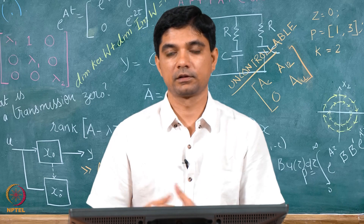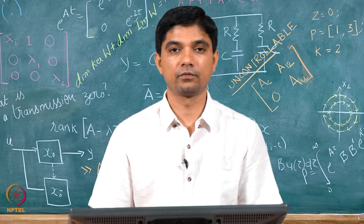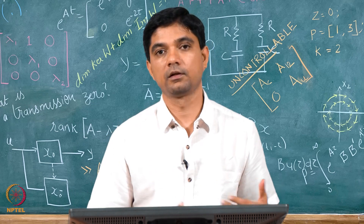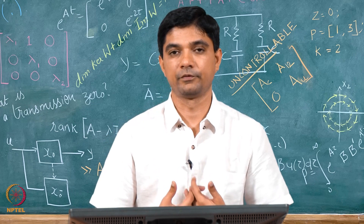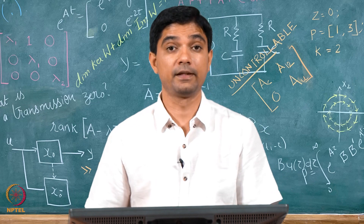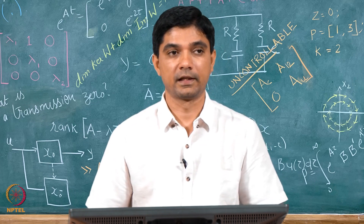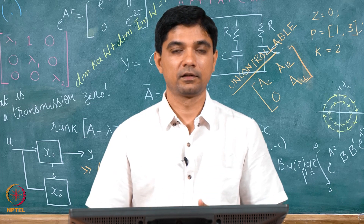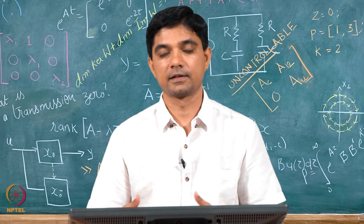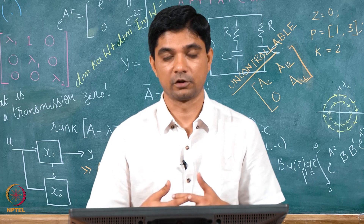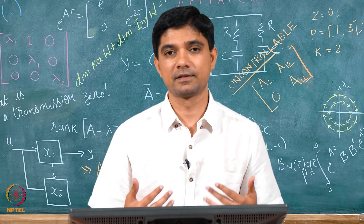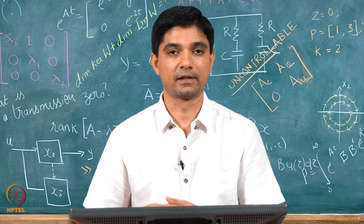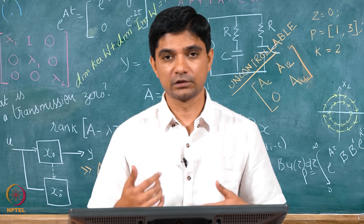Hello everybody. Welcome to lecture number 3 of week 8 on the course on linear systems theory. We were talking in the last 2 lectures about the way we define the concept of observability and why we need it. This will be a short lecture just to understand the discrete-time analog of observability, and most of the steps will be very similar to what we did in the discrete-time systems for controllability analysis, so I will skip much of those steps here.